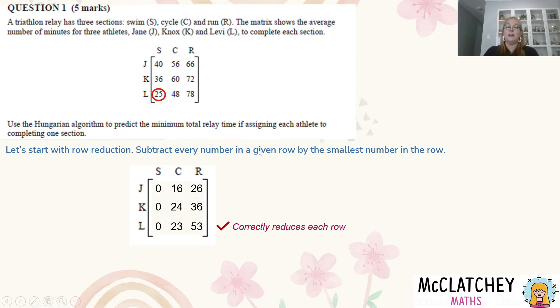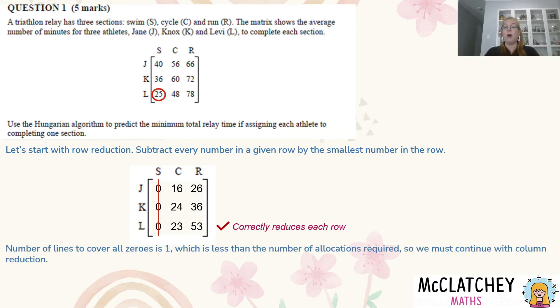The next thing I need to do is to cover my zeros and work out how many covers I've got. Ideally what we want to get to, because we've got three allocations to make - three athletes and we need to allocate three sports - we need to have three covers for the zeros in the minimum number of covers. So here my minimum number of covers is this column here. So I'm not done, that means I need to move on to my column reduction.